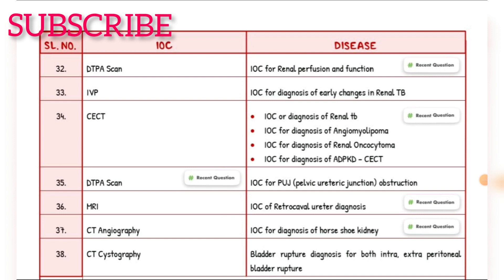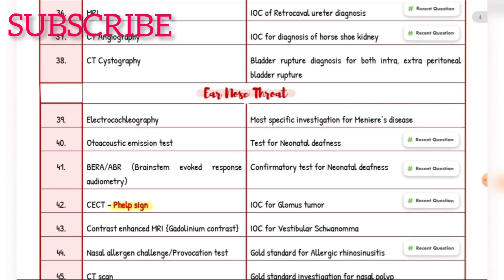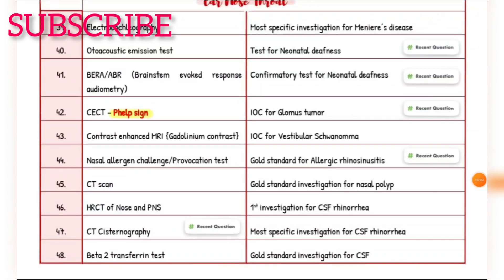Bladder rupture: investigation of choice for both intra- and extra-peritoneal bladder rupture — CT cystography. ENT: Most specific investigation for Meniere's disease — electrocochleography. Test for neonatal deafness — otoacoustic emission. Confirmatory test for neonatal deafness — BERA (brainstem evoked response audiometry). Investigation of choice for glomus tumor — CECT.